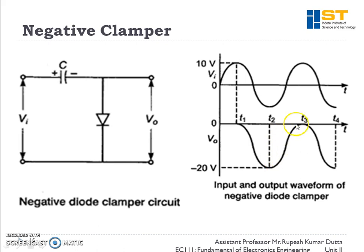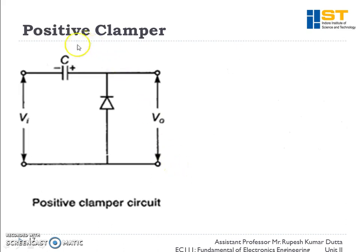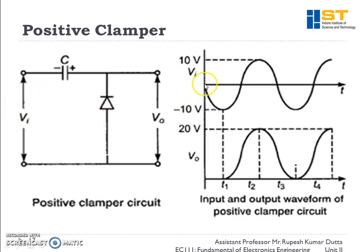Now let's see what a positive clamper is. In the positive clamper, the polarity of the diode is reversed. In this condition, the diode will get shorted only during the negative half cycle, so we assume the first cycle is the negative half cycle. During this cycle, when the wave is going to the negative peak, the capacitor gets charged to the peak value of minus 10 volts. Looking from the output side, we can see this voltage is positive 10 volts — the positive maximum voltage of the input.